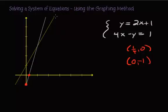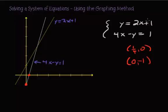Let's label the lines. This first line is y equals 2x plus 1, and this second line is 4x minus y equals 1. To solve this system, we need the point that's on both lines — where do they intersect? Looking at the graph, it appears to be around the point (1, 3). The graphing method isn't the most precise, so you'll have to make a guess.